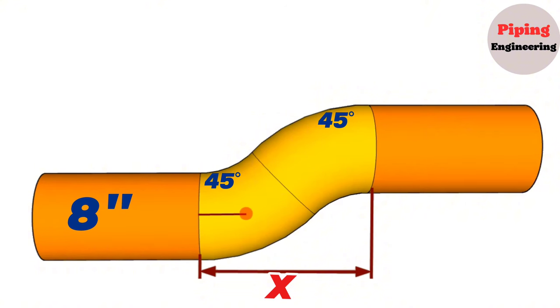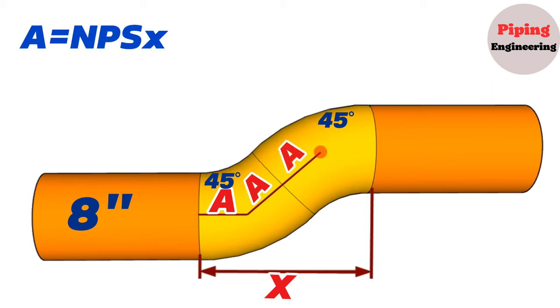We know from our previous lessons that we would calculate the center-to-end distance in long-radius 45-degree angles with this formula. A equals nominal pipe size of elbow multiplied by 15.8. I will leave the link of that video in the description section below, you can enter and watch it.